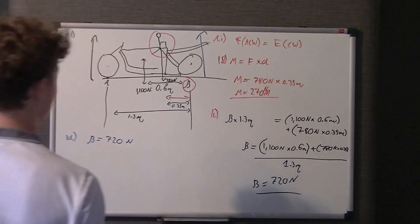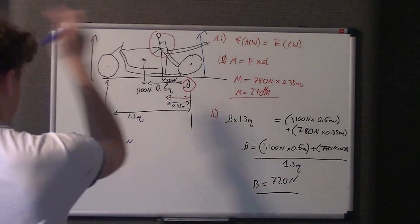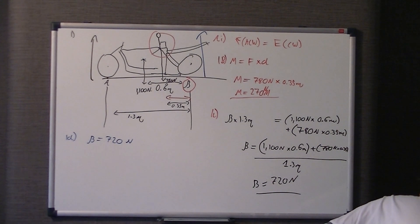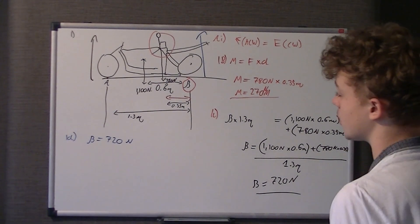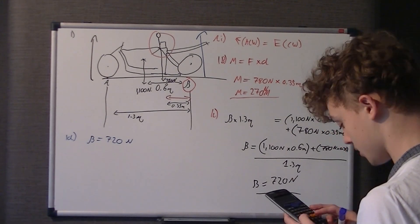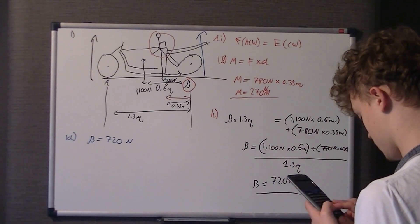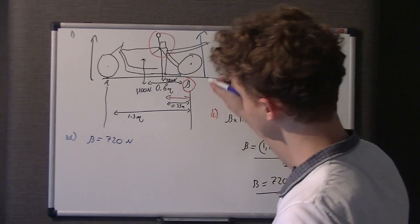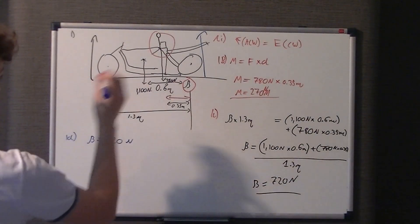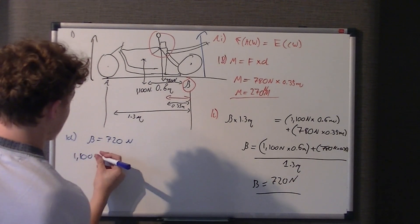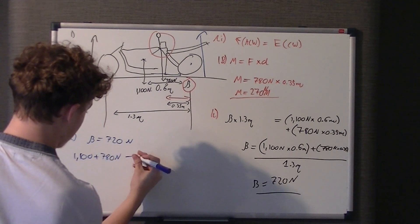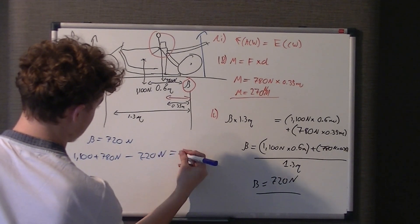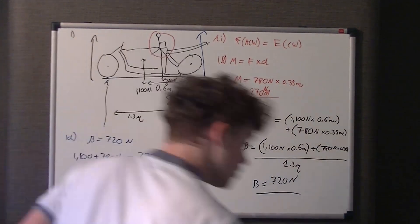So, put that down. B equals 720 newtons. So, A must equal the forces anticlockwise. Sorry, yeah, anticlockwise. So, we know B. Now, all the ones that are going this way, pushing it round, anticlockwise. What we do is we add these two anticlockwise moments. So, 1100 newtons plus 780 newtons take 720 newtons gets us A. And A is equal to 1160. It was specified in there. That's 1200 newtons if you round it up.